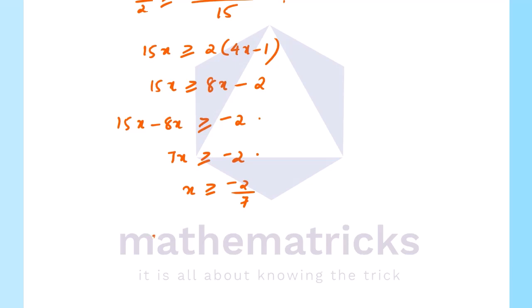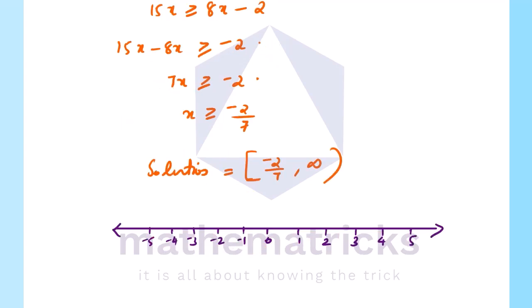The solution is x greater than or equal to minus 2 by 7. This is a closed interval from minus 2 by 7 to infinity. On the number line, minus 2 by 7 is approximately minus 0.28. We mark this as a closed interval on the number line.